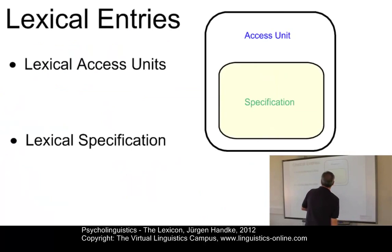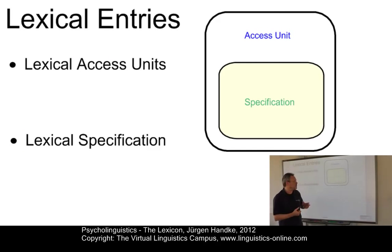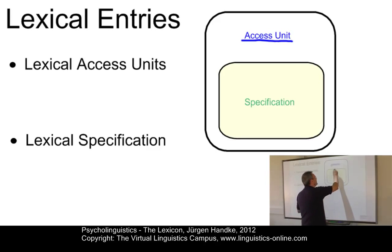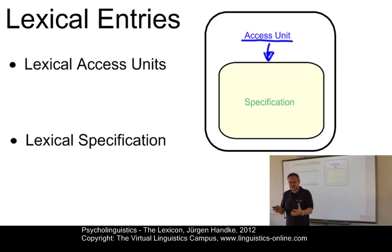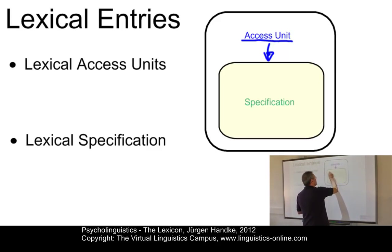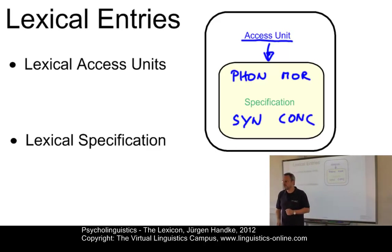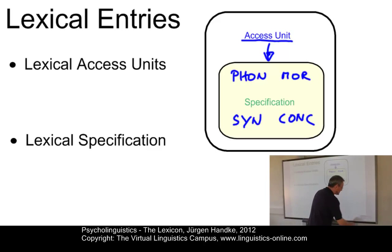Let's now look at the lexical entries themselves. All lexical entries in the mental lexicon must be subdivided into two components. First, we have an access unit — the item with which the mental lexicon is contacted. Second, we have the lexical specification, which is the information associated with each lexical entry: phonology, morphology, syntax, and conceptual information about each item of a language.